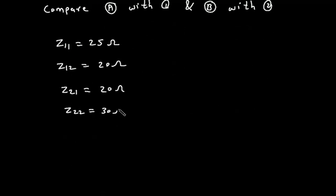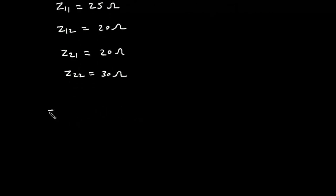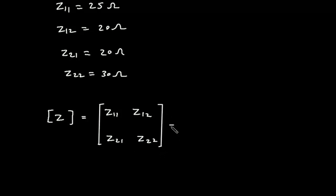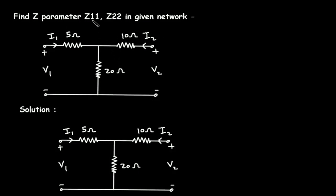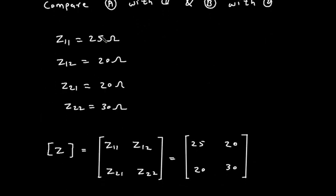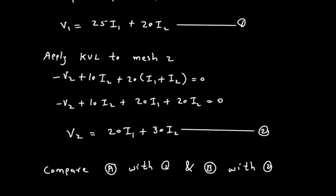From equation B, the coefficient of I2 is 30, so Z22 = 30 Ω. In matrix form, the impedance matrix is: [Z11, Z12; Z21, Z22] = [25, 20; 20, 30]. Therefore Z11 = 25 Ω and Z22 = 30 Ω — this is our final answer.